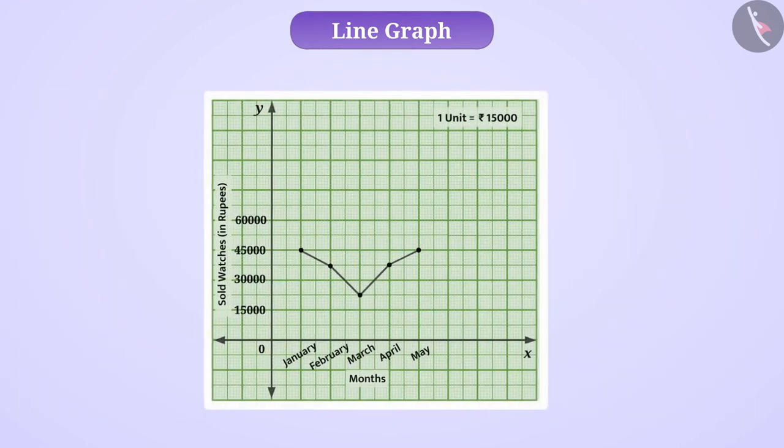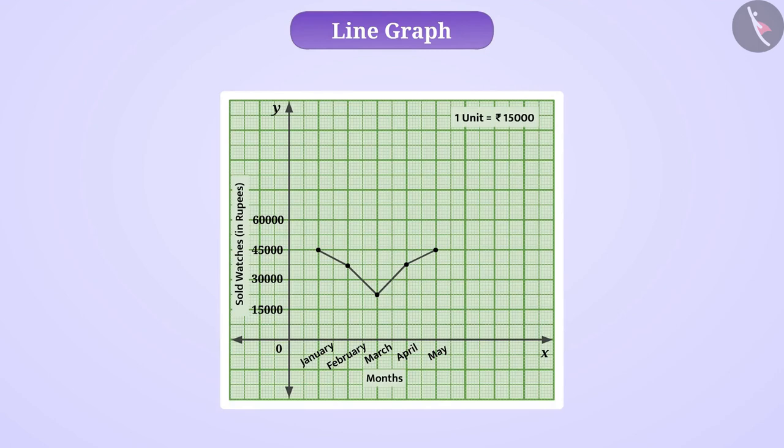A line graph is shown here. Can you tell me what information it gives? Think think! This line graph gives us information about the sales made by a watch manufacturer every month.